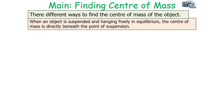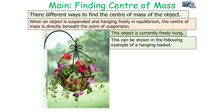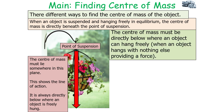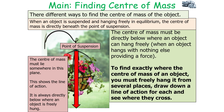The third way to find the centre of mass is when an object is suspended and hanging freely in equilibrium — the centre of mass is directly beneath the point of suspension. In this example of a hanging basket, the centre of mass must lie somewhere in the plane of the point of suspension, and the line of action is always directly below where the object is freely hung. To find exactly where the centre of mass is, you must hang the object freely from several different places, draw a line of action down for each, and see where they intersect.